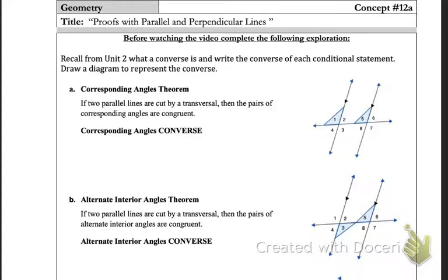So all the theorems that we learned earlier - the corresponding angles theorem, alternate interior angles theorem, alternate exterior angles theorem, same side interior - they were all based on knowing that the lines were parallel to begin with. So if we know the lines are parallel, what that tells us about the angle measures.